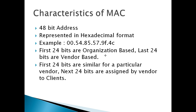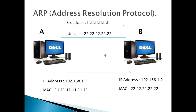The first 24 bits identify the organization, and the next 24 bits identify the specific device — that is the unique part of the MAC address. If you want to use a Layer 2 protocol, you can use ARP — that is the Address Resolution Protocol.